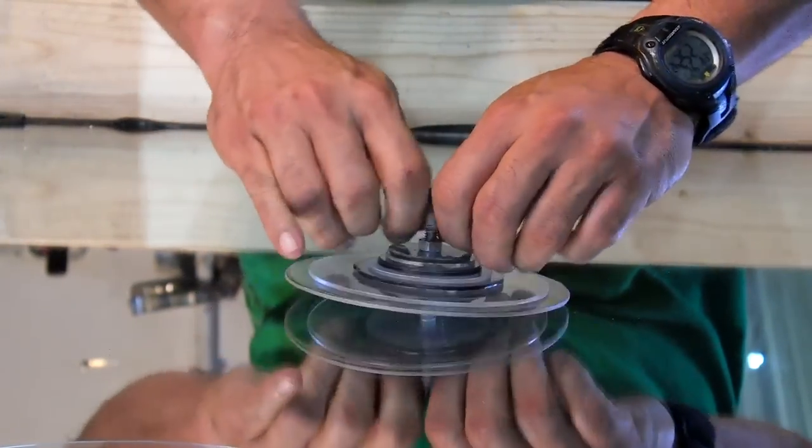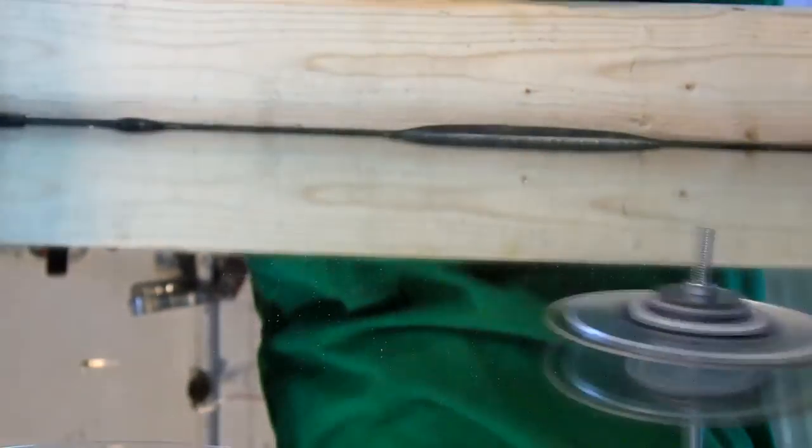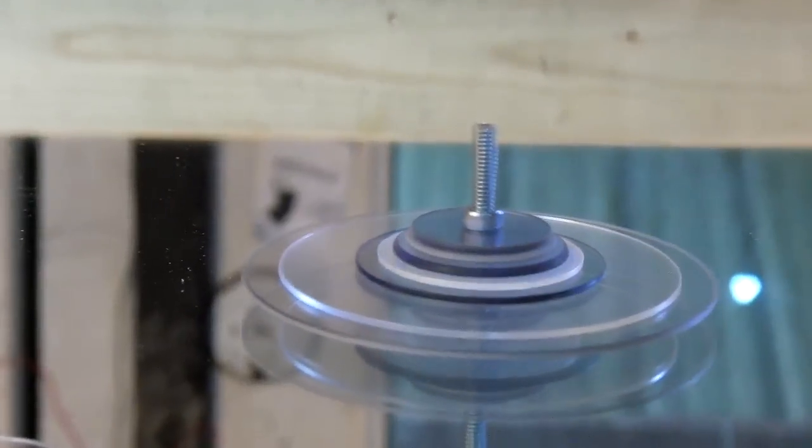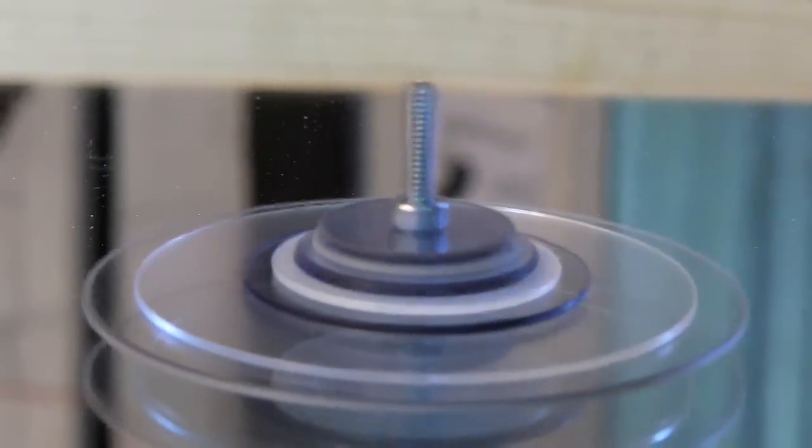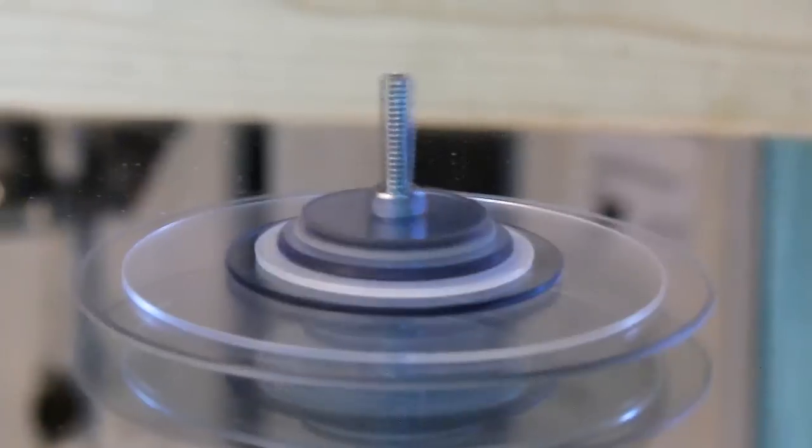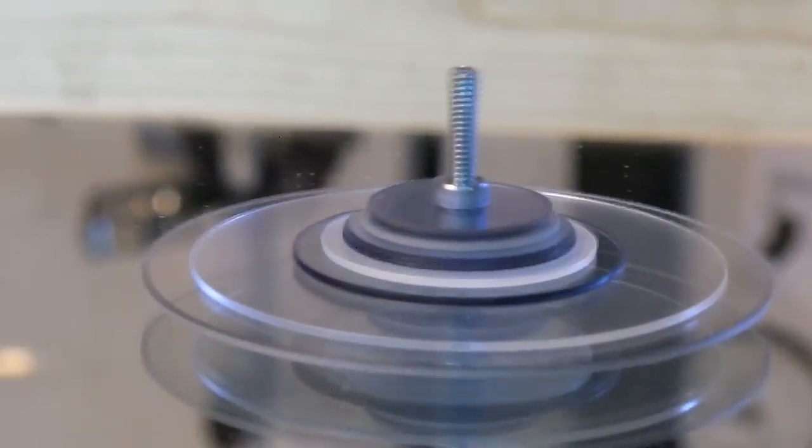By securely grabbing the rope and pulling it in opposite directions you get a super fast spin. This small top has reached speeds over 3000 RPM and a smaller version has reached speeds in excess of 5000 RPM.